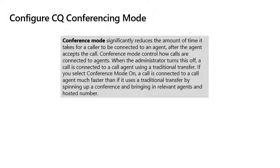Configuring the call queue conferencing mode. Conference mode significantly reduces the amount of time it takes for a caller to be connected to an agent after the agent accepts the call. When the option is turned off, a call is connected to an agent using the traditional transfer method. When conference mode is on, a call is connected to an agent much faster as it spins up a conference and brings in the relevant agents and the hosted number. Keep in mind that for conferencing mode to work, all agents need to be in Teams Only mode.